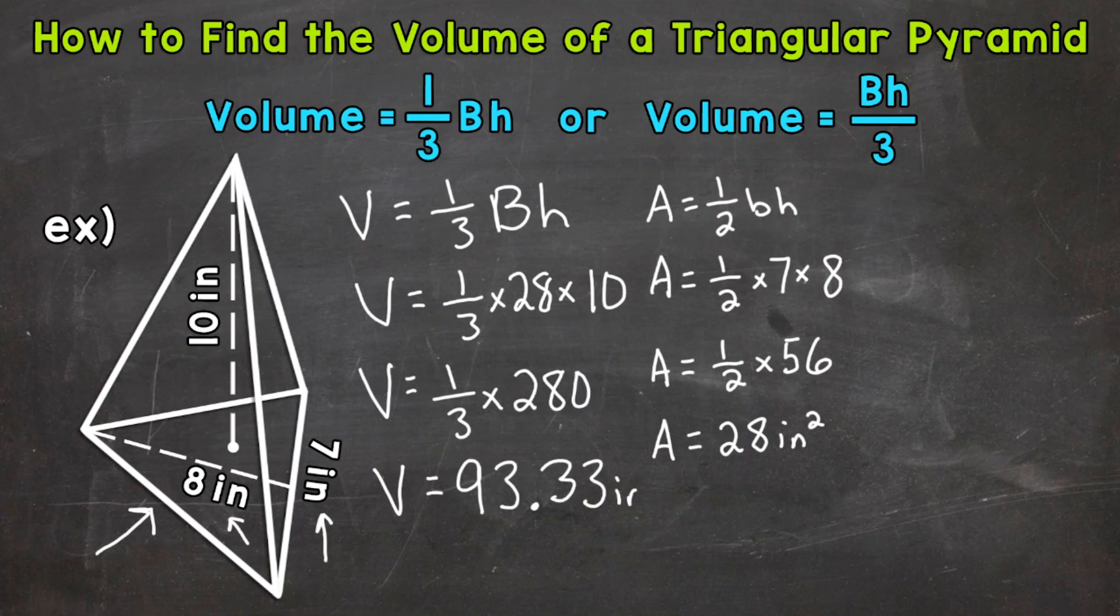And this is volume, so cubic inches. So our final volume, 93 and 33 hundredths cubic inches. And again, I rounded that decimal to the nearest hundredth.